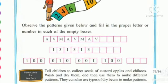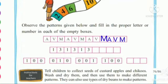Observe the patterns given below and fill in the proper letter or number in each of the empty boxes. In the first one, letters are given: A, V, M — again A, V, M — again A, V. So what will be the next? M will be the next. Then we write A, then V, then M. Now this is the correct pattern.